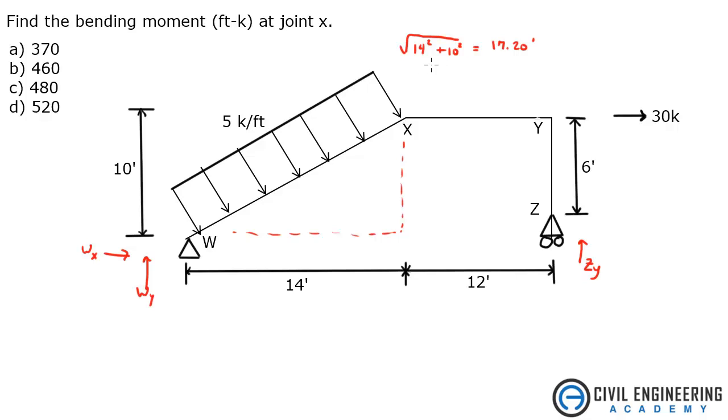Alright, so the next thing I need to do is get the resultant. So we just take that 17.20, multiply that by 5 kips per foot. And I get 86 kips. So right here in the middle of this thing, I've got 86 kips.